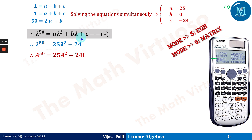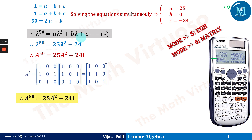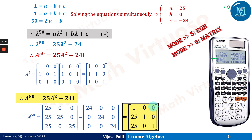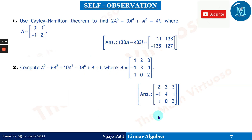Substituting the matrix A and computing 25A² - 24I using the matrix mode (Mode 6) on the calculator, we get the final answer: [25-24, 0, 0; 0, 25-24, 0; 0, 0, 25-24] which simplifies to the matrix [1,0,0; 25,1,0; 25,0,1]. This is the value of A to the power 50.